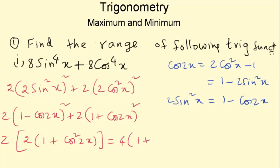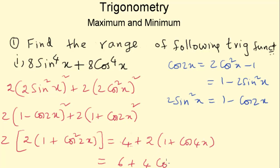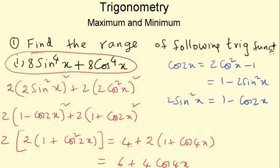Taking 4 inside, that gives us 4 plus 4 cos square 2x. We know that 2 cos square 2x equals 1 plus cos 4x, so 4 cos square 2x gives 2 times (1 plus cos 4x). This whole term simplifies to 6 plus 2 cos 4x. Note: there was a typo earlier — the coefficient is 2, not 4, so the final simplified form is 6 plus 2 cos 4x.